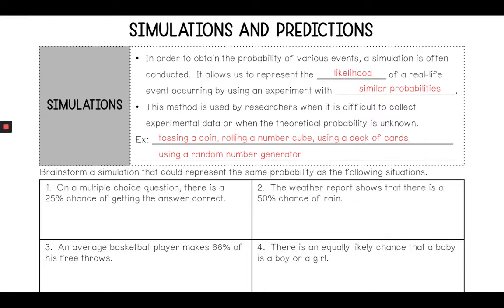So in this one it says brainstorm a simulation that could represent the same probability for the following situations. If we look at this one, it says a multiple choice question where there's a 25% chance of getting that answer correct. Well, I could spin a spinner that has four equal spaces labeled one through four, and I would have a 25% chance of getting a one on that spinner.